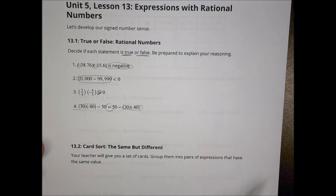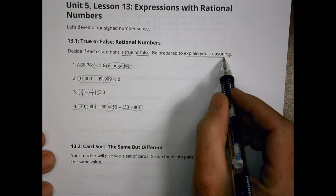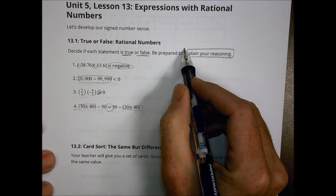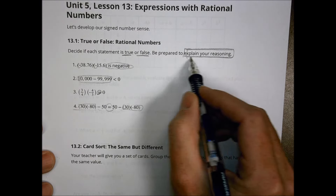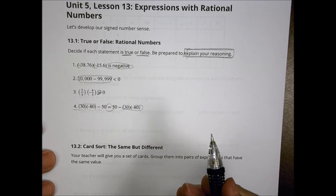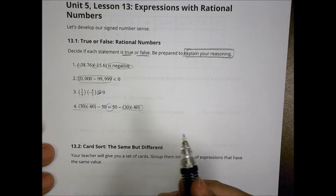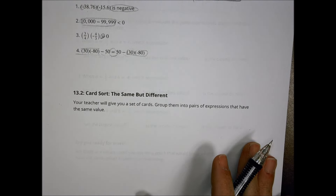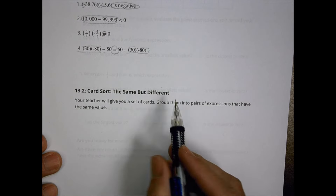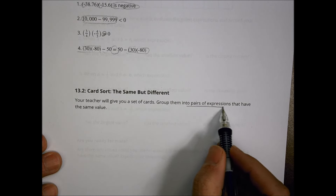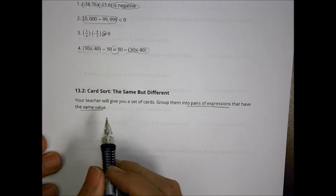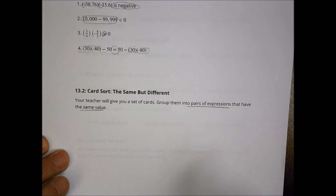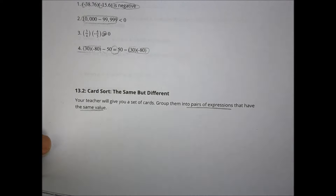You need to decide if each is true or false, then explain your reasoning. This is a key theme in math this year — being able to explain your thinking, not just say something is true, but why it's true or why it's false. In the next activity, your teacher gives you some cards, and you need to group them into pairs of expressions that have the same value. They might look similar, but that doesn't mean they are.